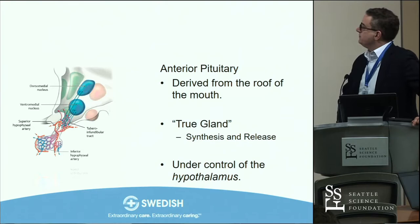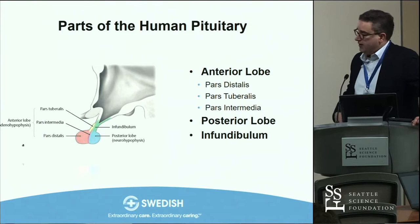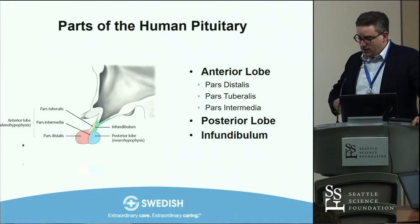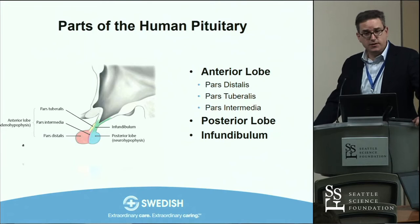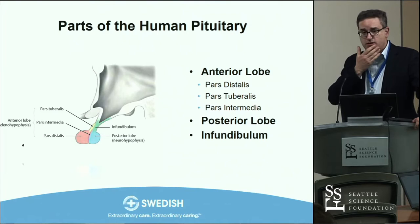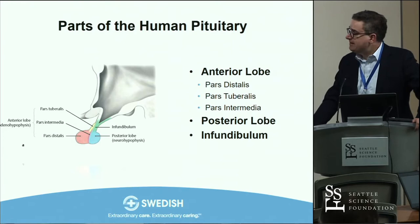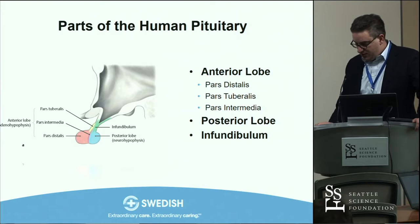We have three different parts of the anterior pituitary. The pars tuberalis is basically where the gonadotropes focus, and the gonadotropes are not actually derived from pituitary tissue — they're derived from yolk sac. They migrate during embryogenesis to form the pars tuberalis of the pituitary, so it is a true gland because hormones are synthesized there, but it's not derived from Rathke's pouch.